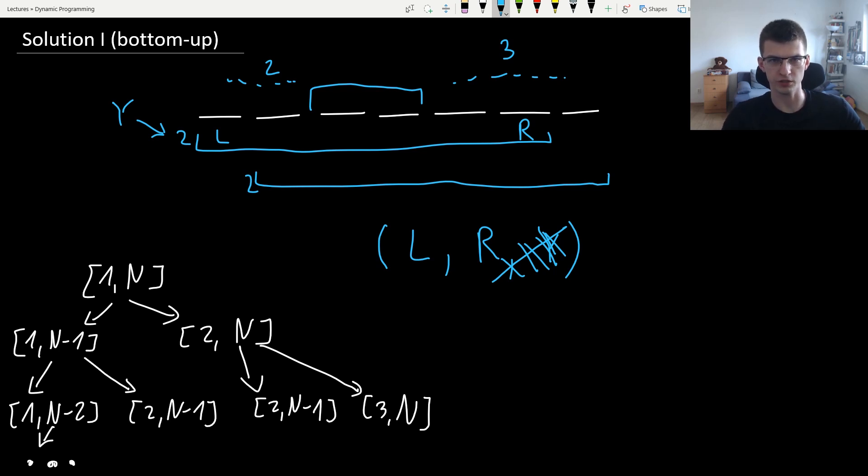You can see the tree of recursion, the transitions between states on the left and since there are some repeated states, here 2,N-1 and again 2,N-1, this means DP should be used and can be used.